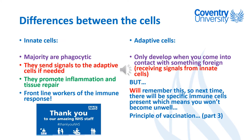This slide shows the differences between innate cells and cells of the adaptive immune system. The majority of innate cells are phagocytic but can send signals to the adaptive immune system if needed. Generally, because of the nature of those cells — especially neutrophils — they promote inflammation, which allows other immune cells to reach the area of infection, and they also promote tissue repair.